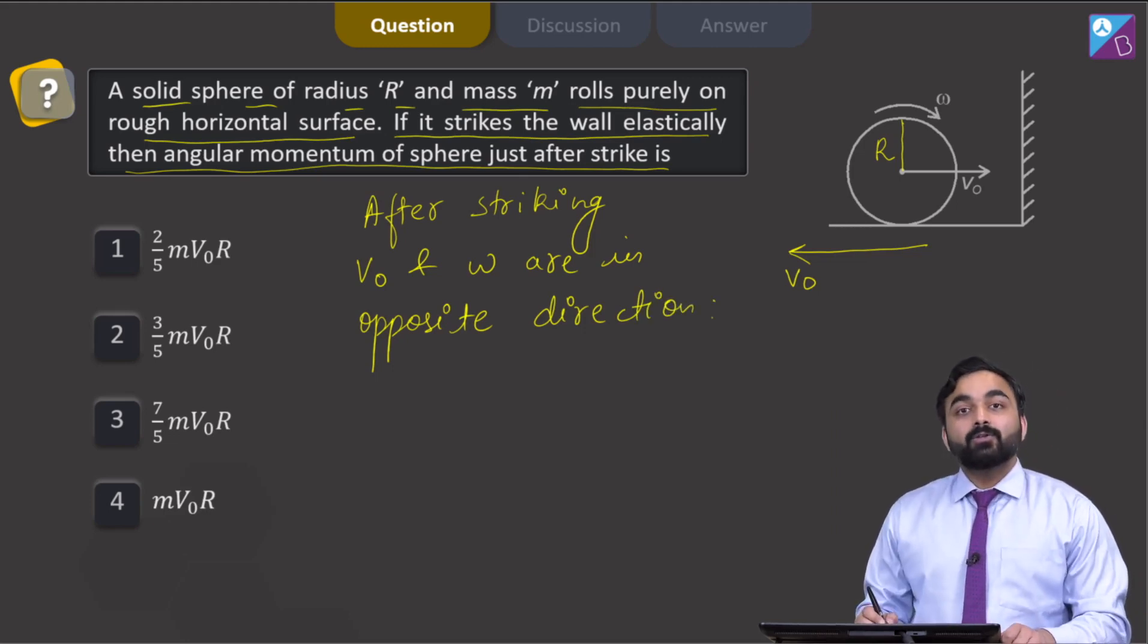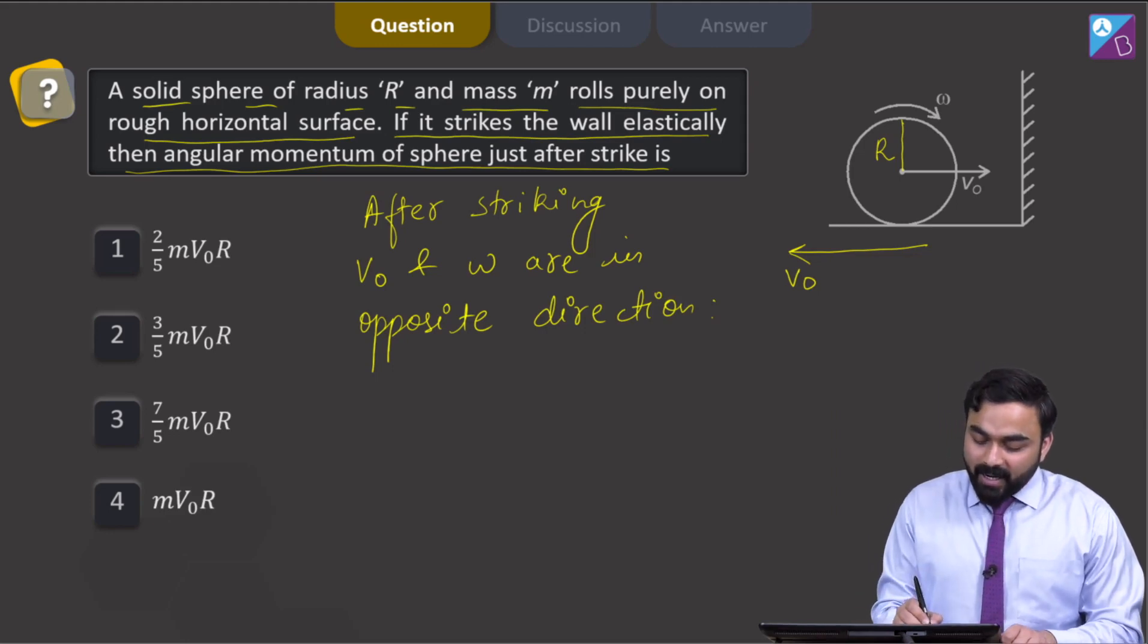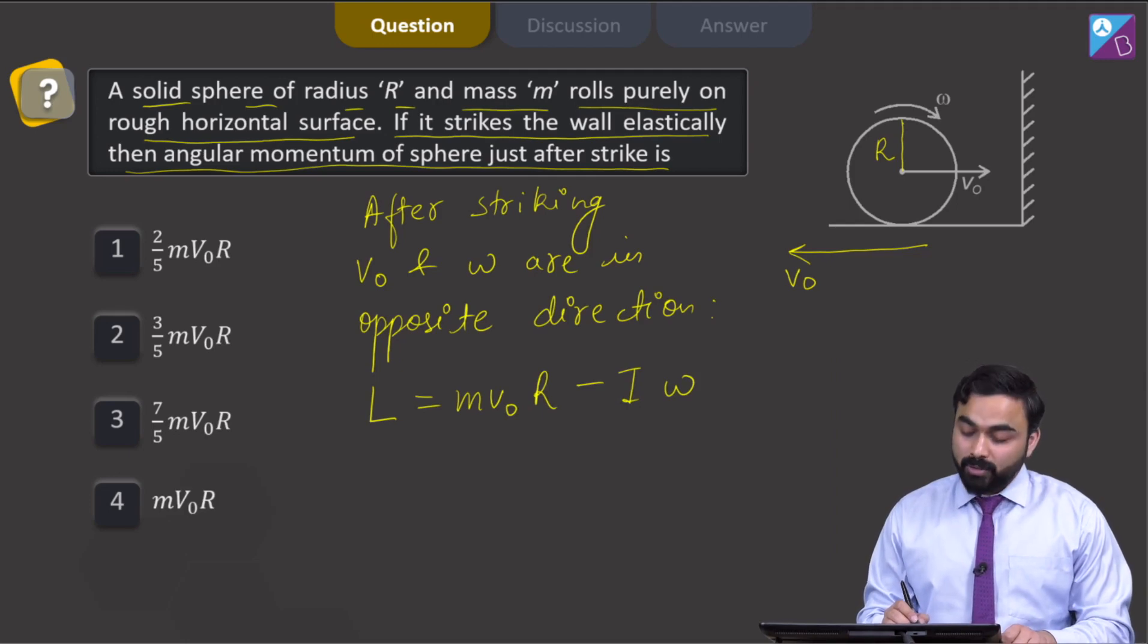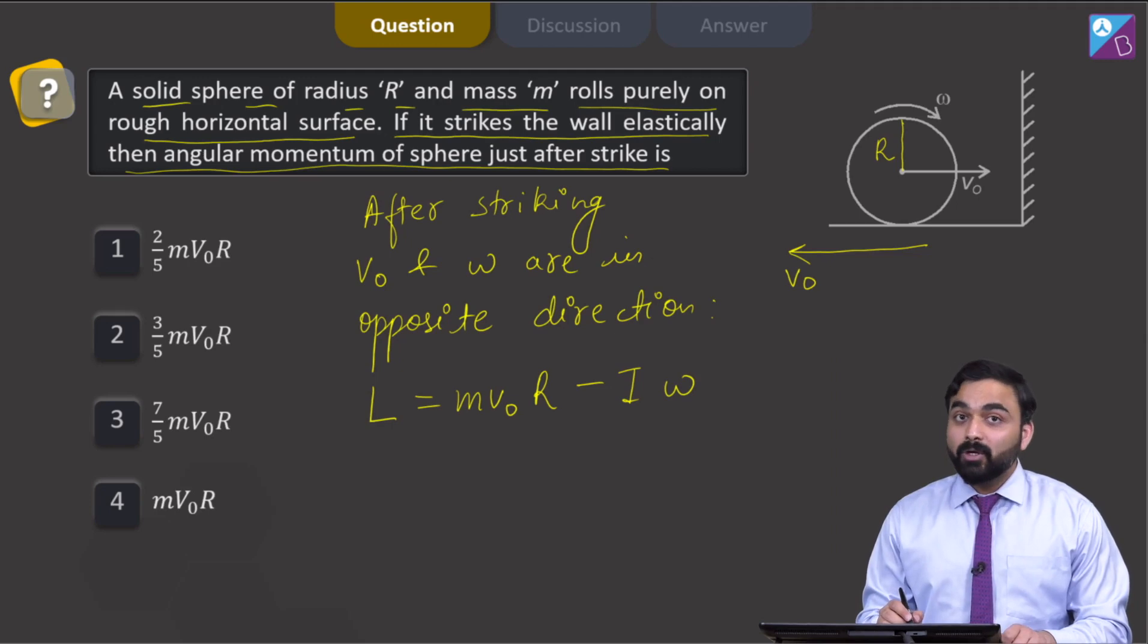So what I can write here? I can write L is equal to M V 0 R minus I omega, because both V 0 and omega are in opposite direction. So their angular momentum will also be in opposite direction while returning.